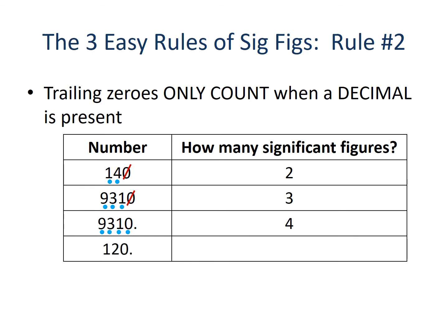In our last rule-two example, we have 120 with a decimal. Rule number two says trailing zeros only count when a decimal is present. Because of the presence of the decimal, all three of these numbers are going to be important to us, and this number has three significant figures.